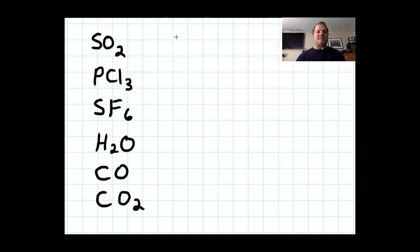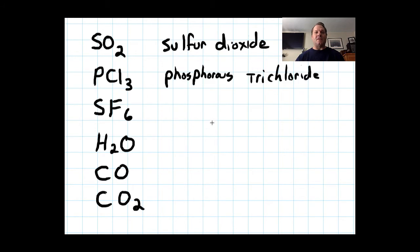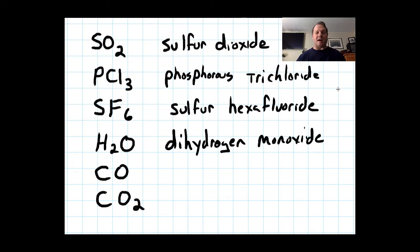So let's practice naming a few compounds here. SO2 would be called sulfur dioxide. PCl3 would be phosphorus trichloride. SF6 would be called sulfur hexafluoride. H2O, dihydrogen monoxide. We can call it water. CO, carbon monoxide. CO2 we know is carbon dioxide.